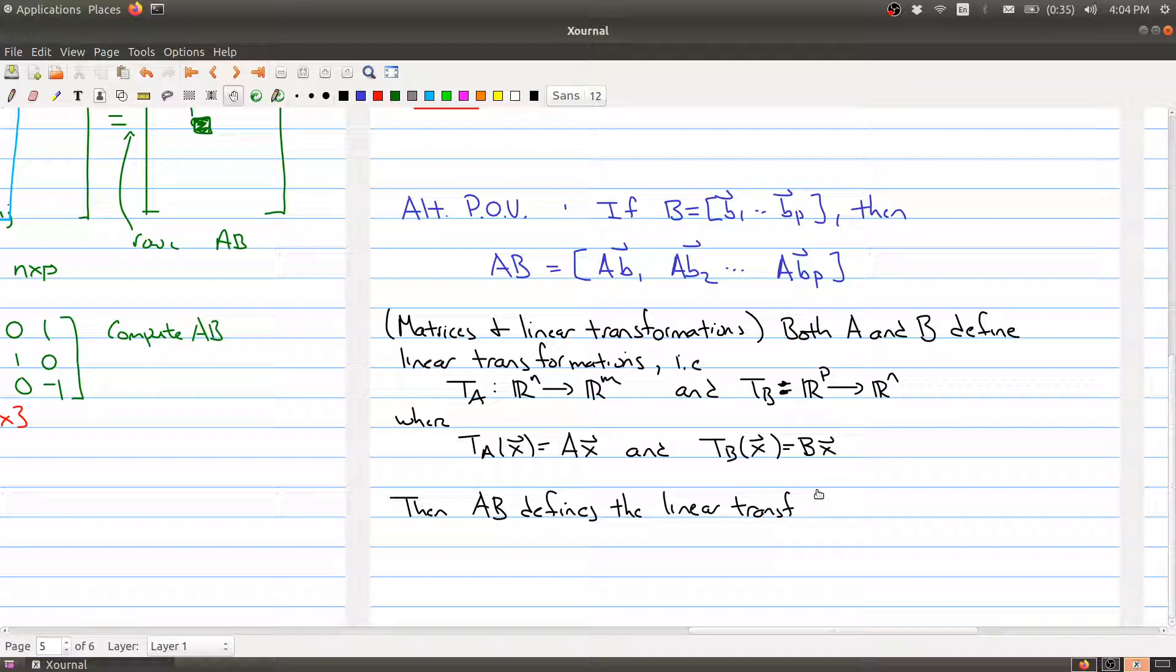Well, it defines a linear transformation T_AB that goes from R^p to R^n that has the following property, right? And which is defined to be the composition of the two functions. So which is defined by composing the two functions.